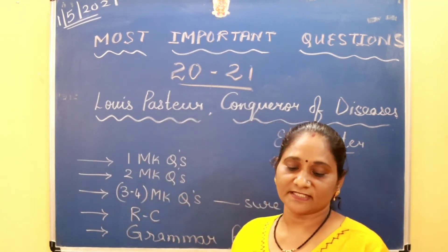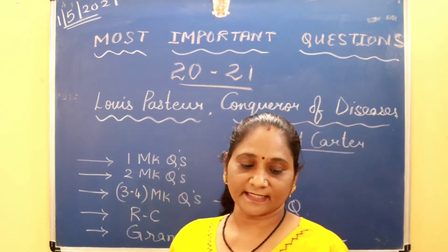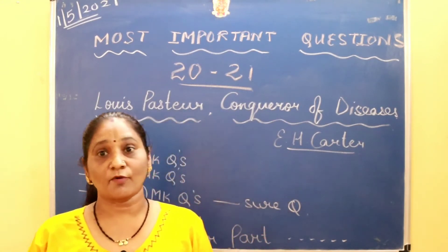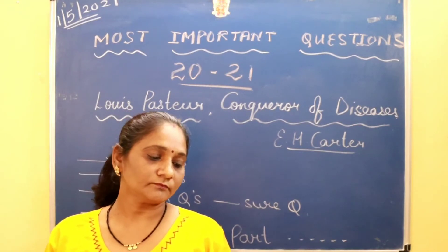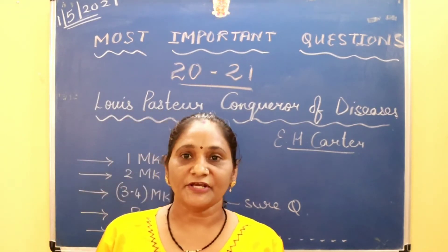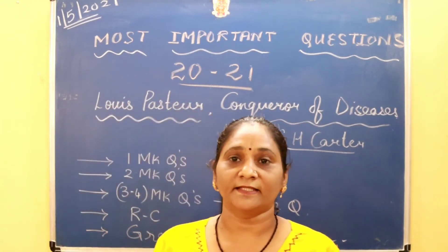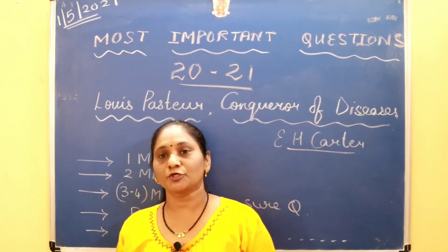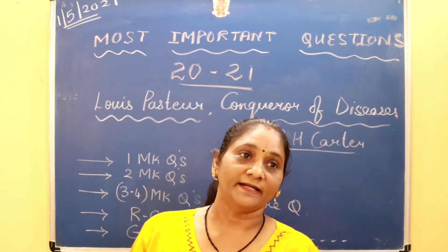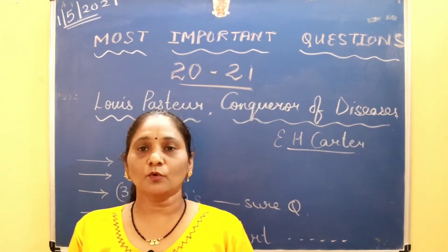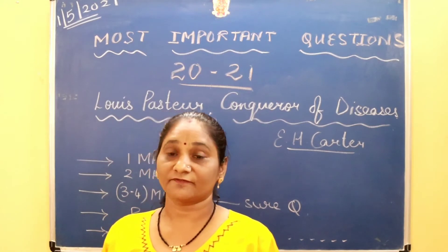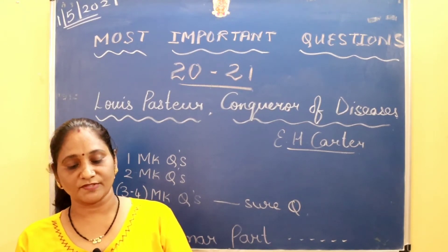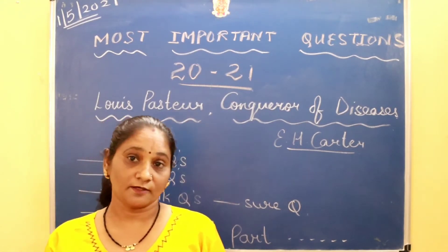What discoveries did Pasteur make about yeast? He said that yeast was alive and made up of tiny living cells. What is rabies? Rabies is a dangerous disease of dogs and other mammals, caused by a virus transmitted through saliva to humans, causing madness. What are the two laws Pasteur spoke about? The first law was the law of blood and death, and the second was the law of peace — Pasteur always supported the law of peace.